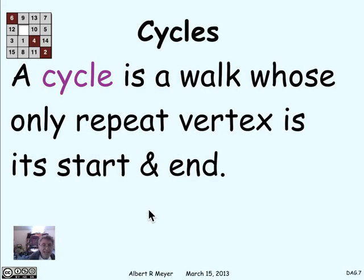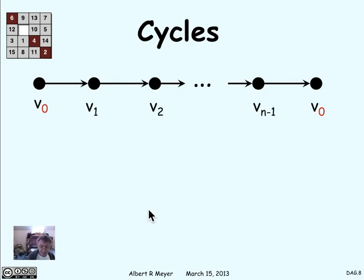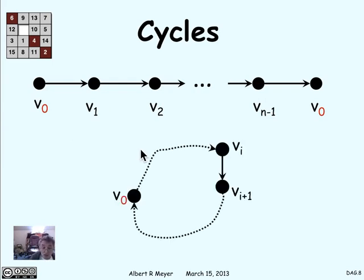A special case of a closed walk is a cycle. A cycle is a walk whose only repeat vertex is its start and end. A single vertex all by itself is a length-0 cycle, so you're never going to get rid of length-0 cycles because they're the same as vertices. But you can hope to ensure that positive length cycles are not present. To represent a cycle as a path, you show the sequence of vertices v0, v1, v2, where all vertices from v0 up to v_{n-1} are different — that's what makes it a cycle — except that the last vertex v0 is a repeat of the first. So it's natural to draw it in a circle, following edges from v_i to v_{i+1} all the way back around to v0.